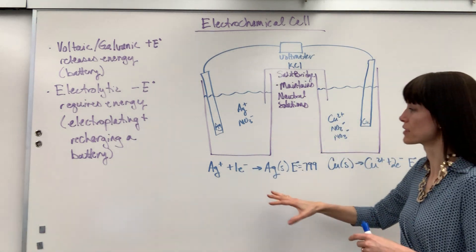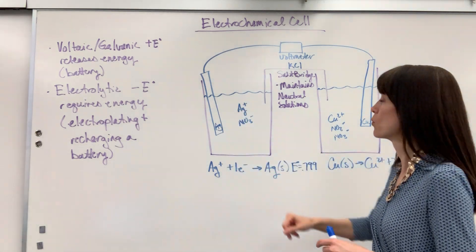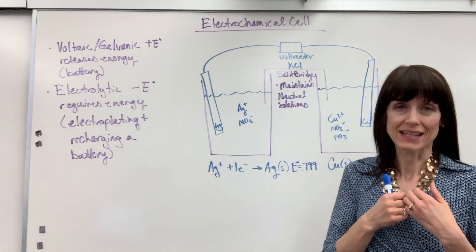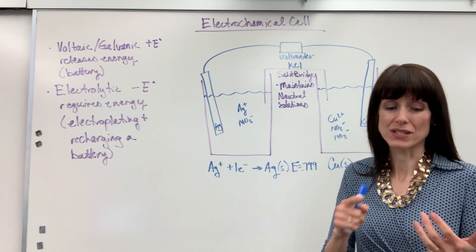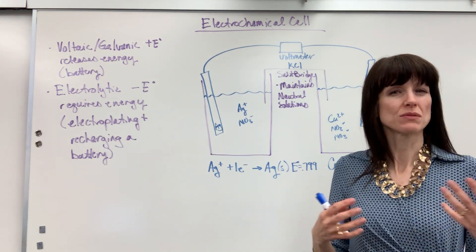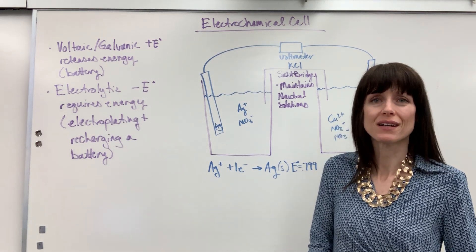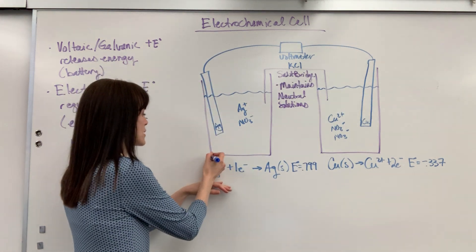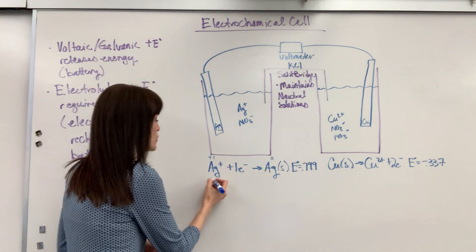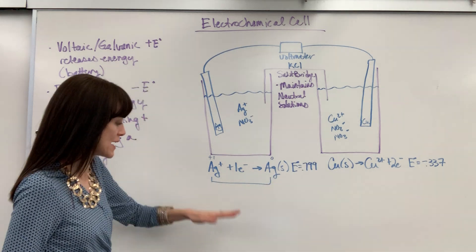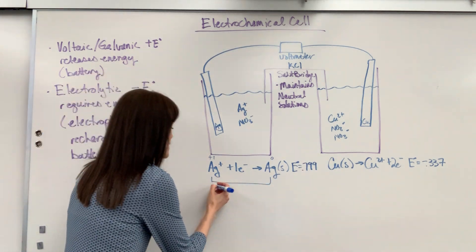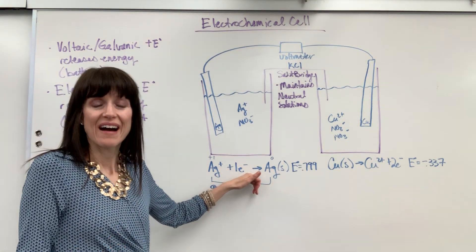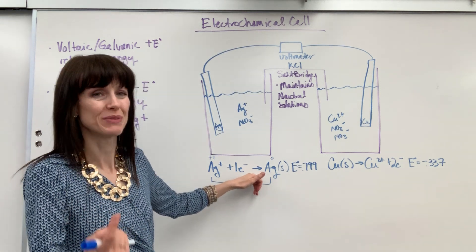Here we have our two half reactions. We're going to have silver in one cell and copper in the other cell. The first thing I always have my students do is identify everything: what's reduced, what's oxidized, the anode, the cathode — really labeling everything. Very similar to balancing chemical reactions, we start with oxidation numbers. Silver ion is a plus one; silver solid is a zero. Going from plus one to zero, I'm down by one, which means we gained one electron. This is written as a reduction half reaction, just like you see on standard reduction potential tables.